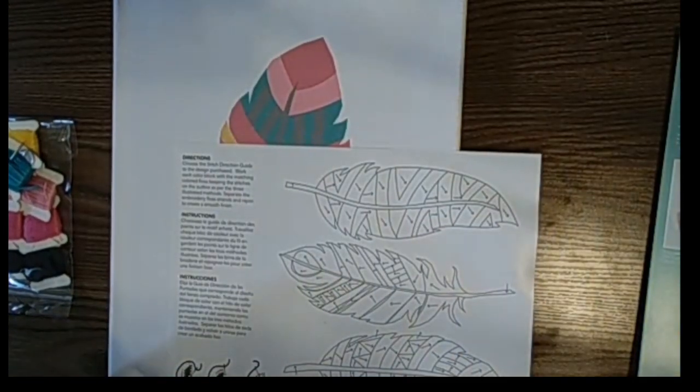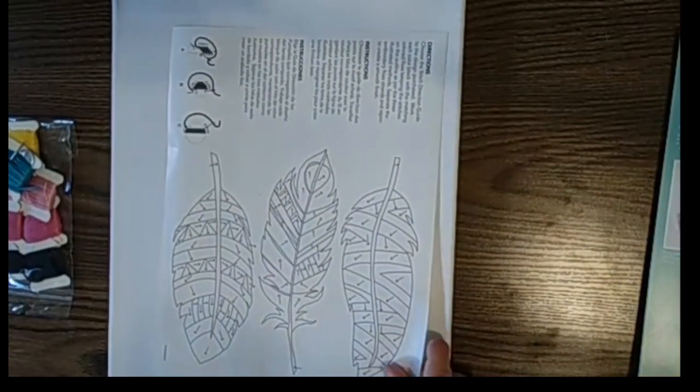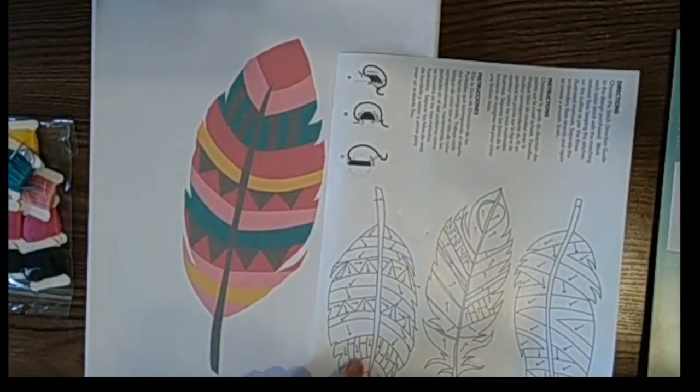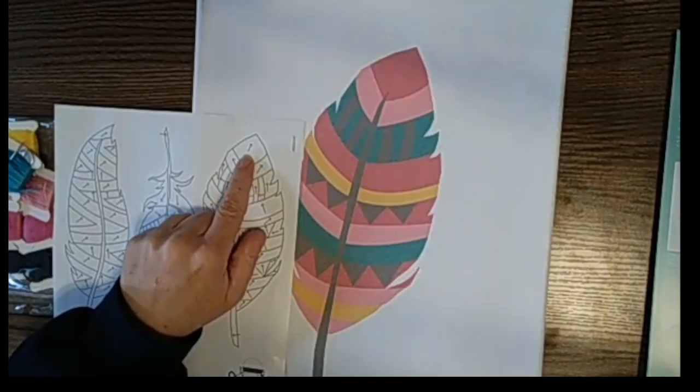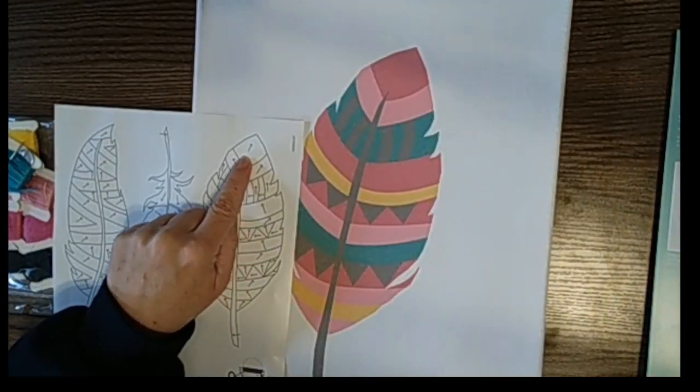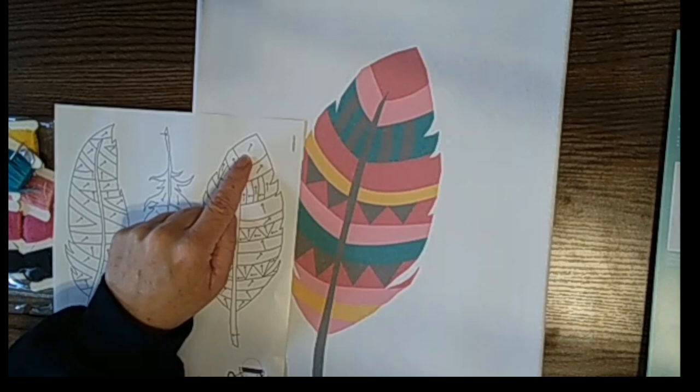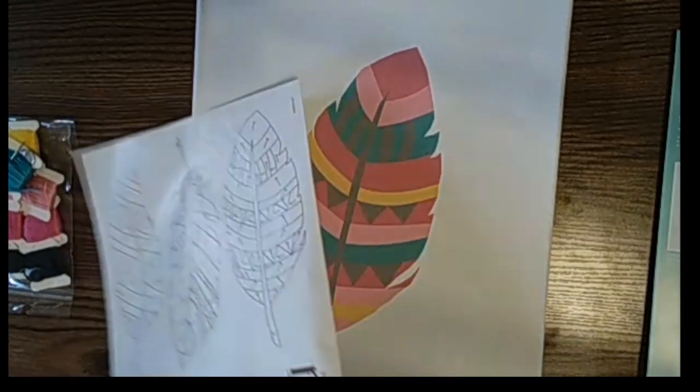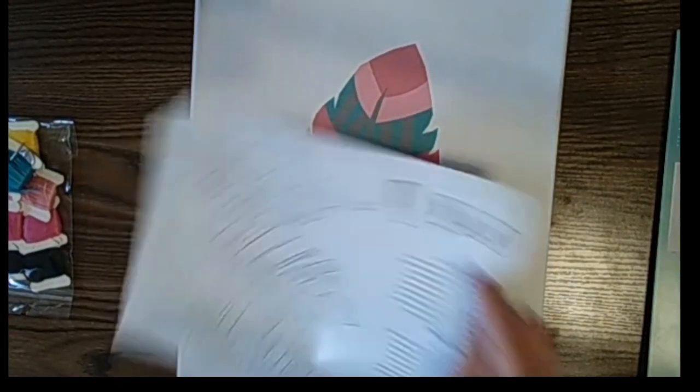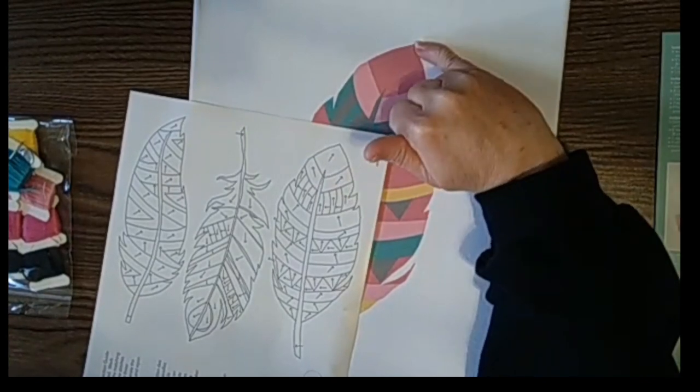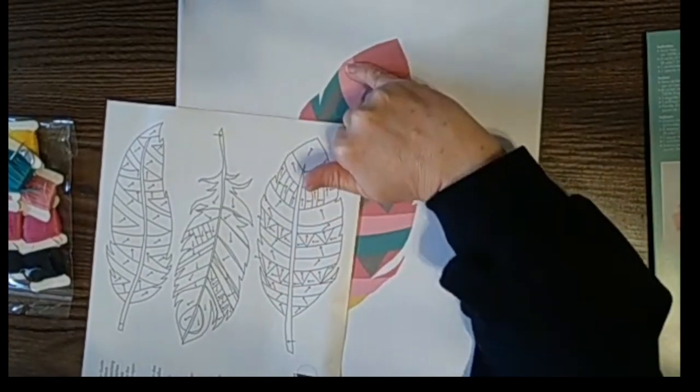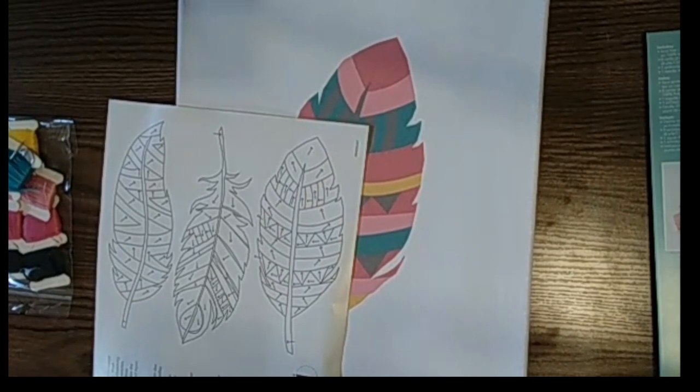So the directions say choose the stitch direction guide to the design purchased. There are three different designs. My design is this one here. We need to follow the arrows when we embroider. The first part you go this way, for the second part you go this way, and so forth. So you just follow the arrows.